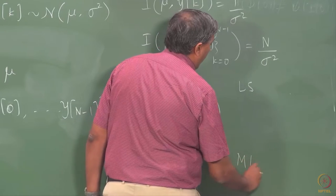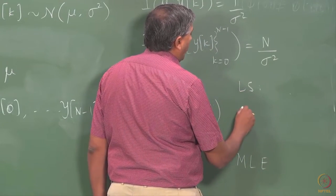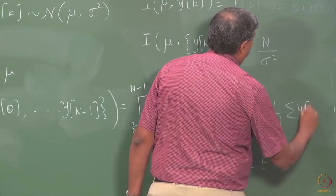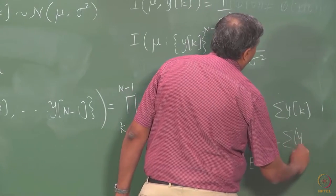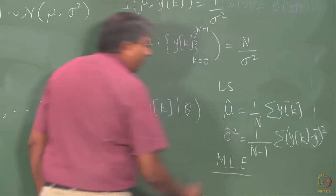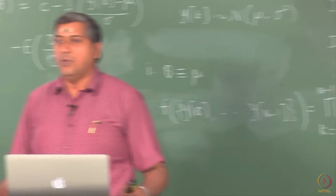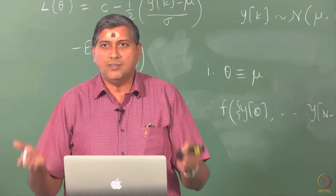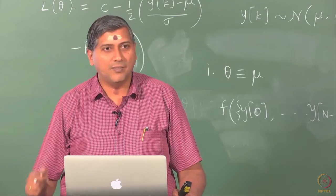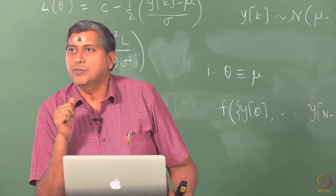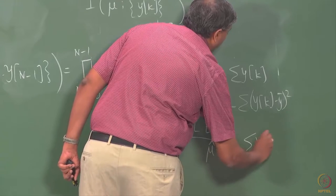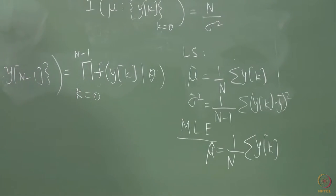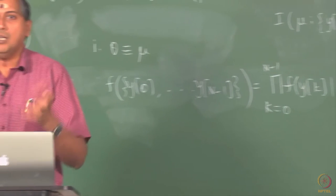If I use least squares, the estimate of mean is the sample mean. MLE also gives you the sample mean as the optimal estimate of mu — you set the derivative of the log likelihood with respect to mean to zero and get the sample mean. So MLE gives the same estimate as least squares for the mean. The sample mean is optimal in both the least squares sense and the maximum likelihood sense — a very attractive estimator.